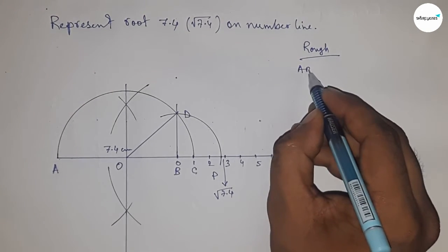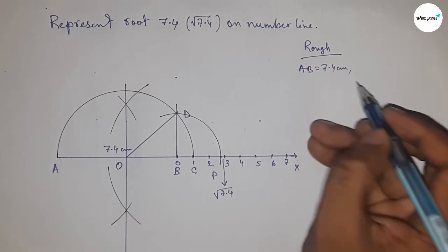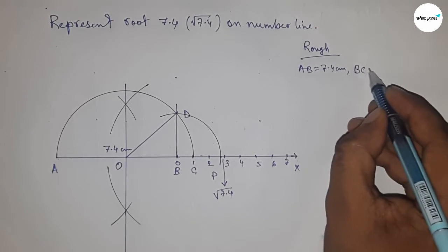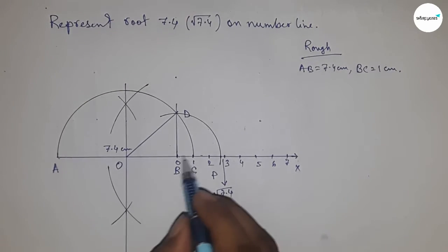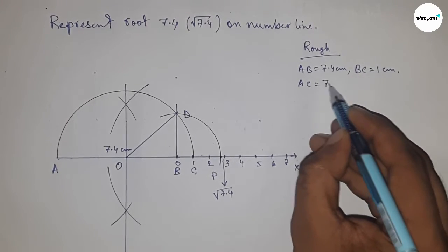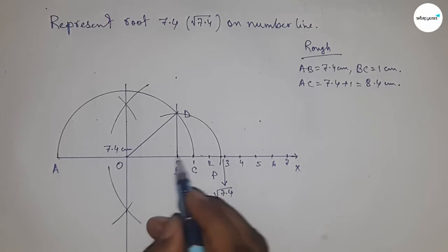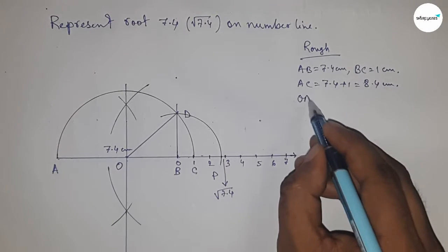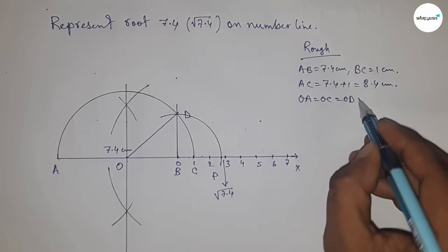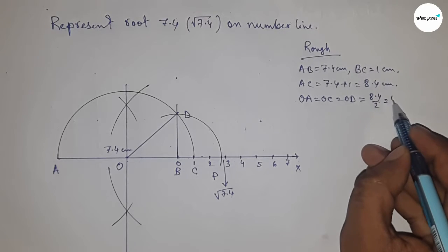Given AB equals 7.4 centimeters, BC equals 1 centimeter. So AC equals 7.4 plus 1, which is 8.4 centimeters. Now radius OA, OC, and OD equal 8.4 divided by 2, which equals 4.2 centimeters.